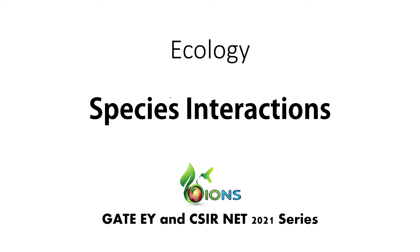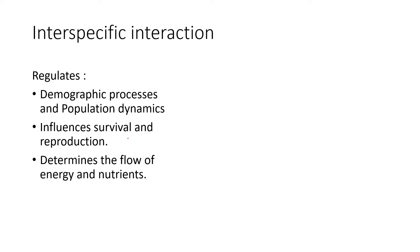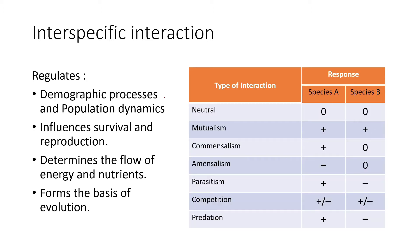Species interaction, or interspecific interaction, regulates multiple aspects of ecology — the demographic processes, the population dynamics. It controls how a population will grow or decline, and it influences the survival and reproduction of a particular species as well as the entire community. It determines the flow of energy and nutrients from one level to another, and forms the basis of evolution. There are multiple types of interactions that we can club into major types.